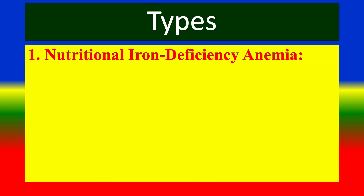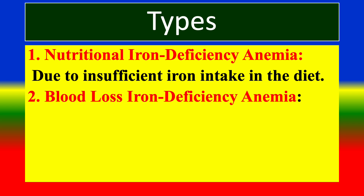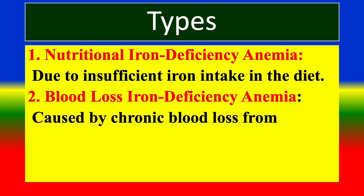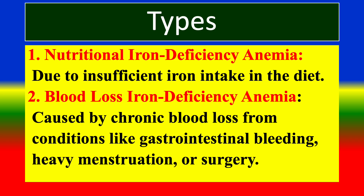Types of iron deficiency anemia. First, nutritional iron deficiency anemia, due to insufficient iron intake in the diet. Second, blood loss iron deficiency anemia, caused by chronic blood loss from conditions like gastrointestinal bleeding, heavy menstruation, or surgery.